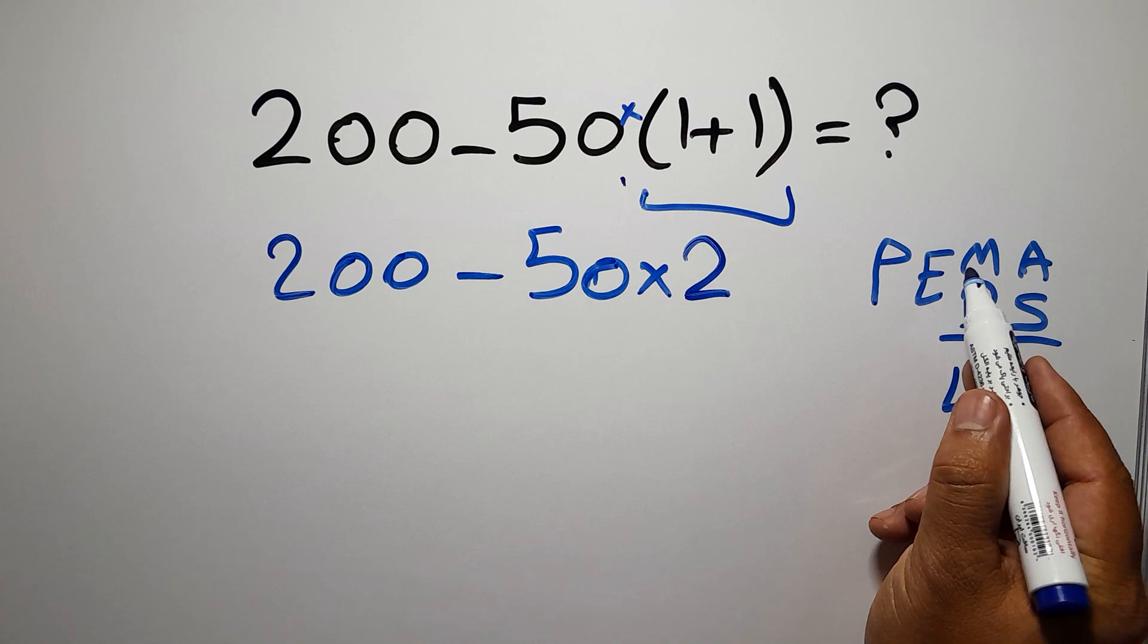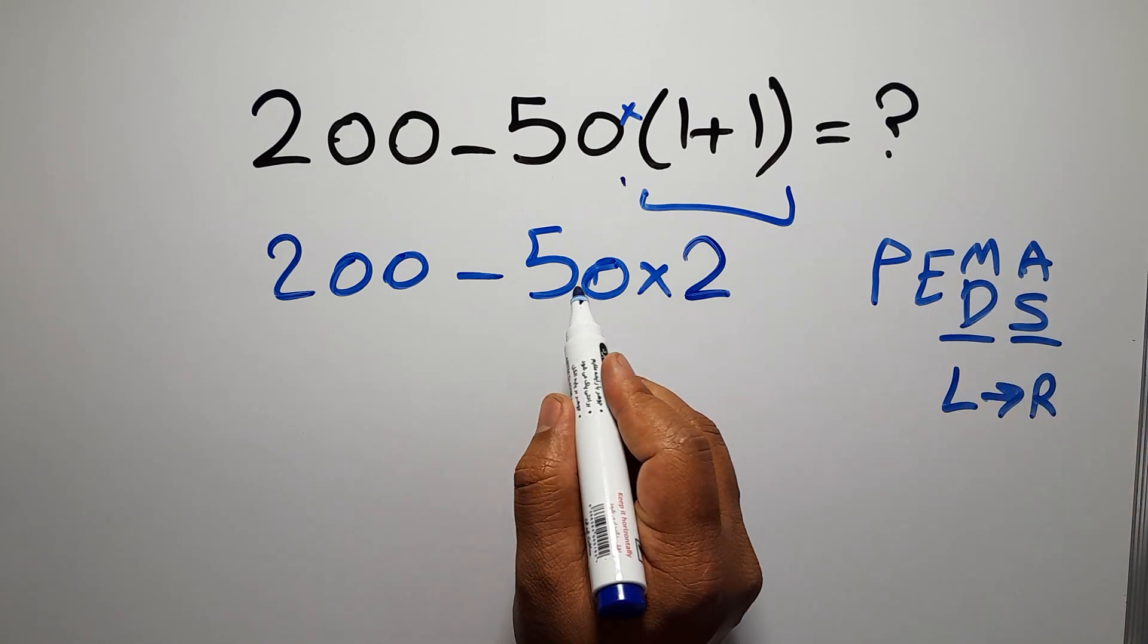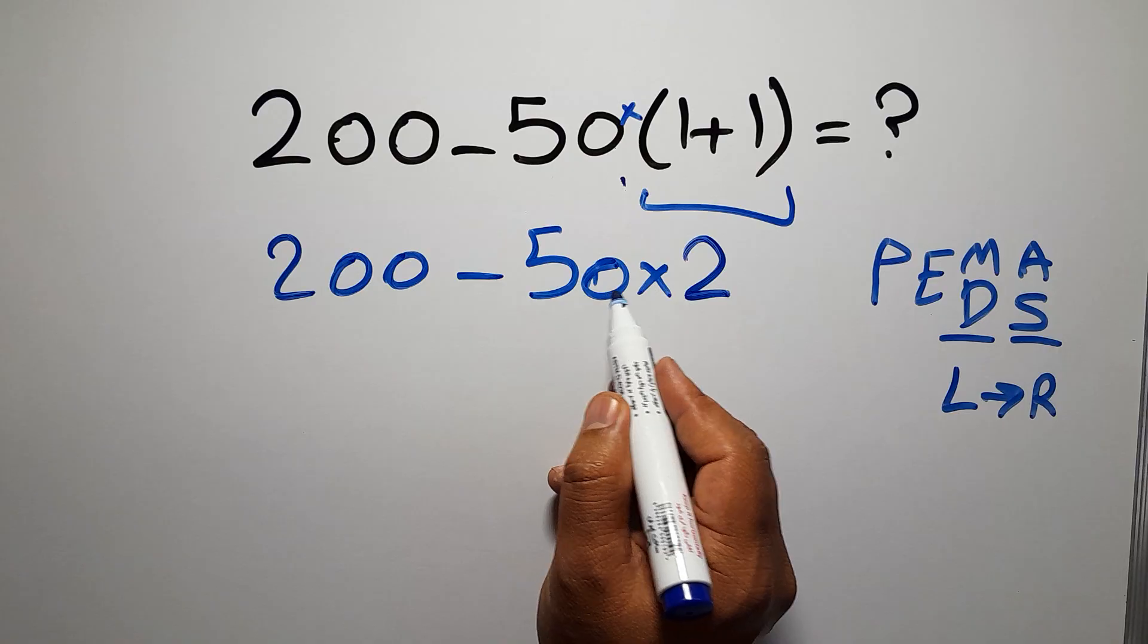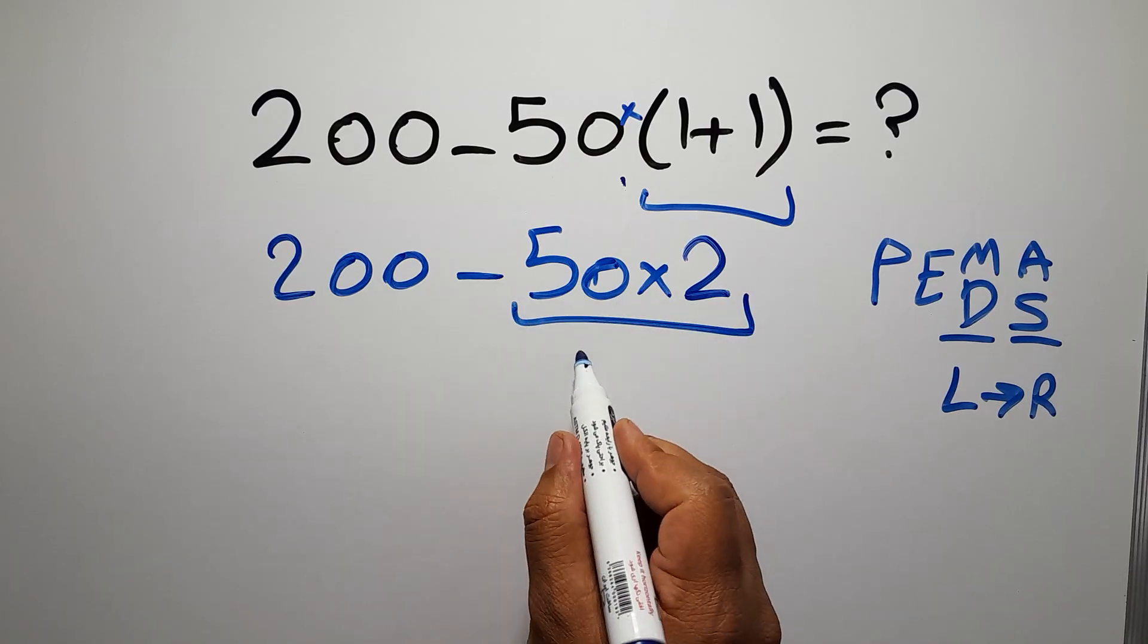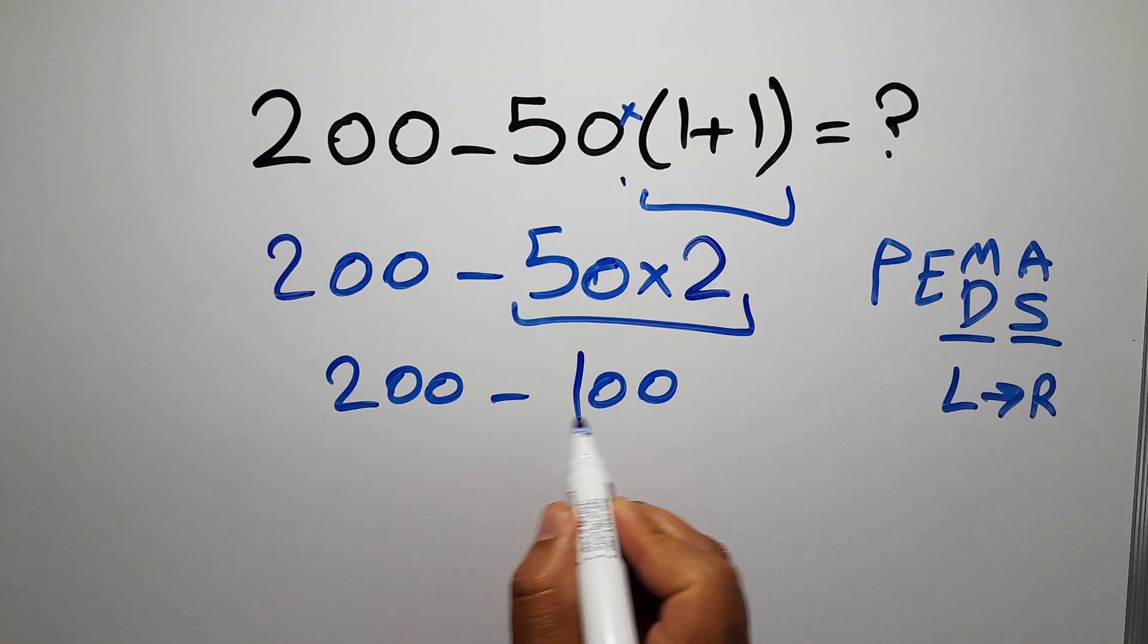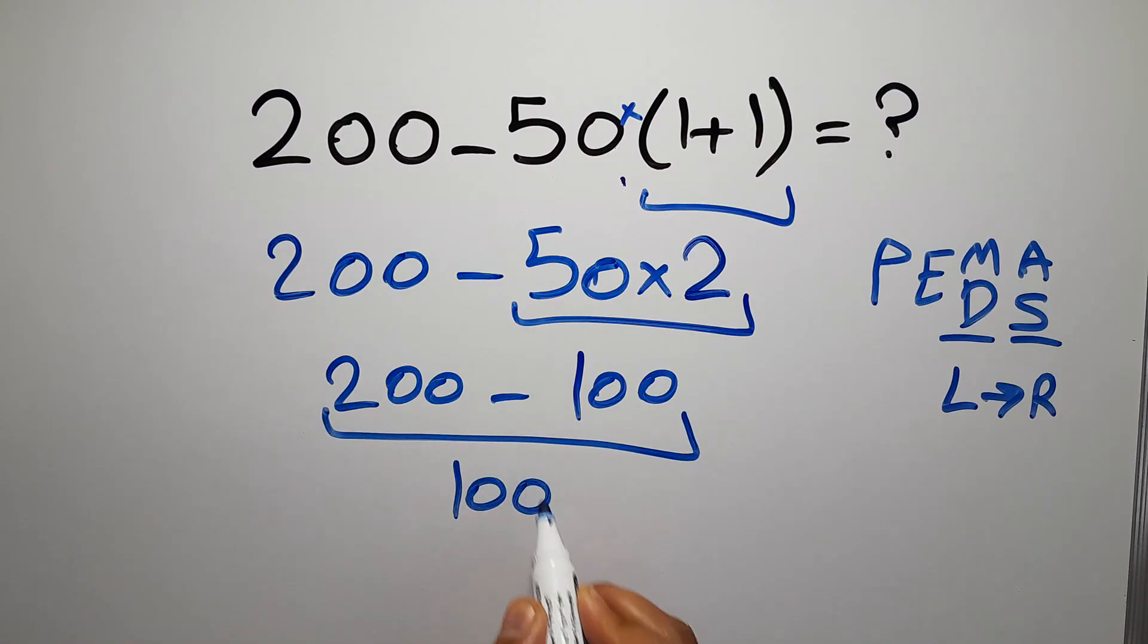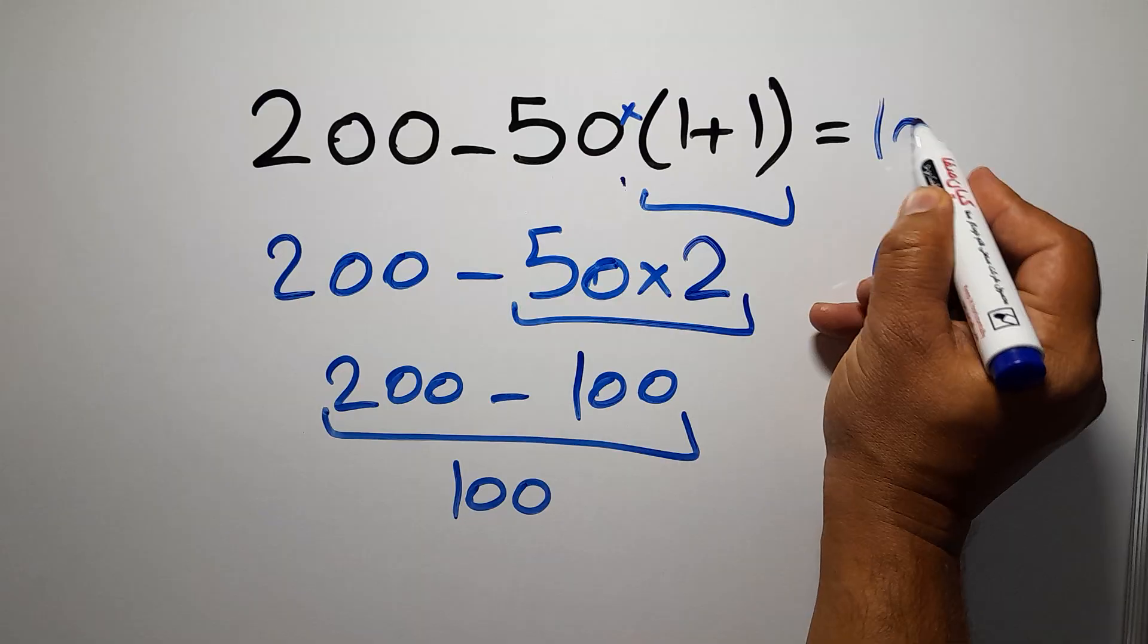because in PEMDAS, multiplication comes before subtraction. So first this multiplication. 50 times 2 is just 100. So 200 minus 100, which equals 100. So this is our final answer to this problem. The correct answer is 100.